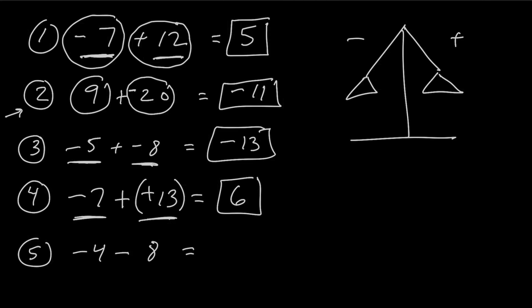For number 5, negative 4 minus 8 — did you get negative 12? Again, think of subtraction as adding the opposite. Change the subtraction sign into an addition sign and make that second number the opposite sign. Now you can see we have a negative plus a negative, which is going to be a negative. It's like walking backwards 4 steps plus another 8 steps — in total, we walk backwards 12 steps.